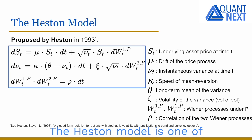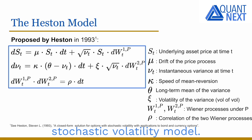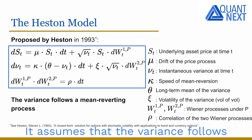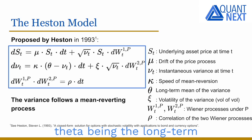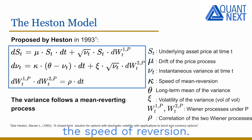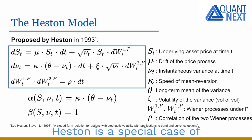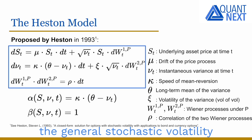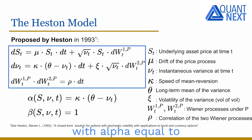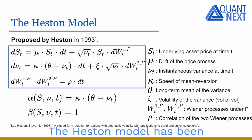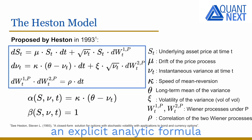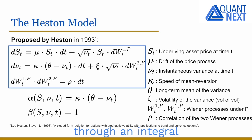The Heston model is one of the most famous stochastic volatility models. It assumes that the variance follows a mean-reverting process, theta being the long-term mean of the variance and kappa controlling the speed of reversion. Heston is a special case of the general stochastic volatility model seen before, with alpha equal to kappa times (theta minus nu) and beta equal to one. The Heston model has been quickly popular as it leads to an explicit analytic formula through an integral for the pricing of European call and put options.